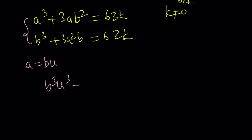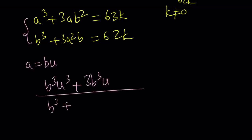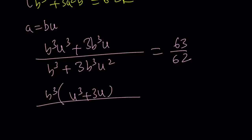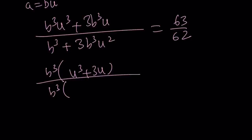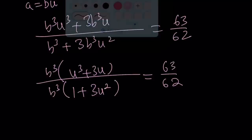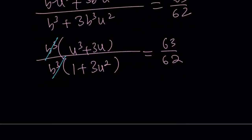If you substitute a equals bu, you're going to get b cubed u cubed plus 3b cubed u in the numerator, and b cubed plus 3b cubed u squared in the denominator, which equals 63 over 62. Factoring out b cubed gives u cubed plus 3u on top and 1 plus 3u squared on the bottom. The b cubed cancels out, leaving us with a cubic equation after cross-multiplication.